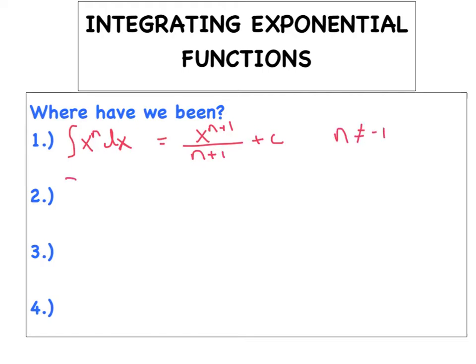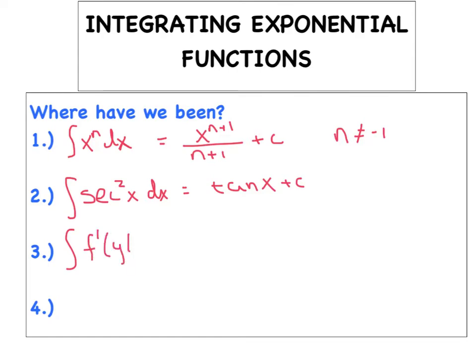Then we talked about integrating all of our trig functions. For instance, the antiderivative of secant squared is simply tangent. There was a grand total of six basic trig rules. Then we took a look at a generic u-substitution — the opposite of the chain rule. I call it anti-chain rule.